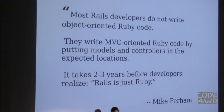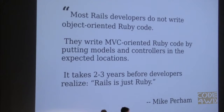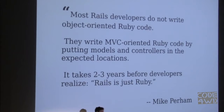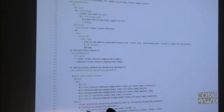Famous people — like millionaires like Mike Perham — figured this out years ago and criticized the way we write Rails applications, like five to eight years ago. He basically nails it: after two or three years in Rails, you figure out that Rails is actually only Ruby, so you can use more abstractions if you want to.